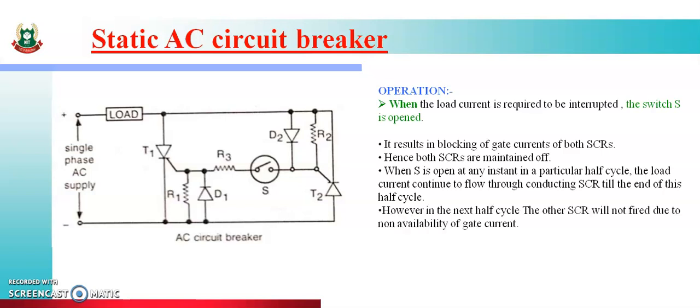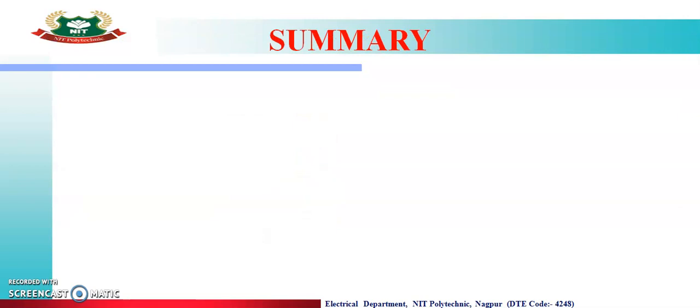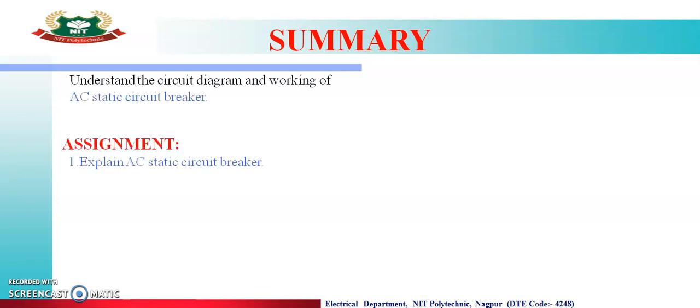In the next half cycle, the other SCR will not fire due to the non-availability of gate current. This is the static AC circuit breaker. Thus, the maximum time delay for breaking the circuit is one half cycle. Summary: in this lecture, we studied and understood the circuit diagram and working of the AC static circuit breaker. Assignment: explain the AC static circuit breaker.